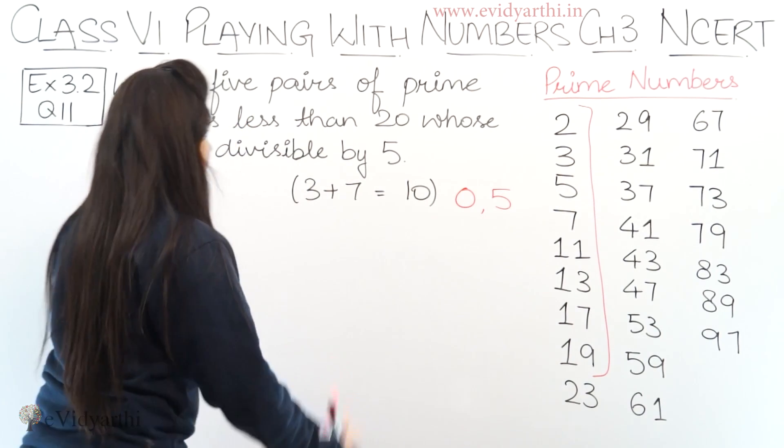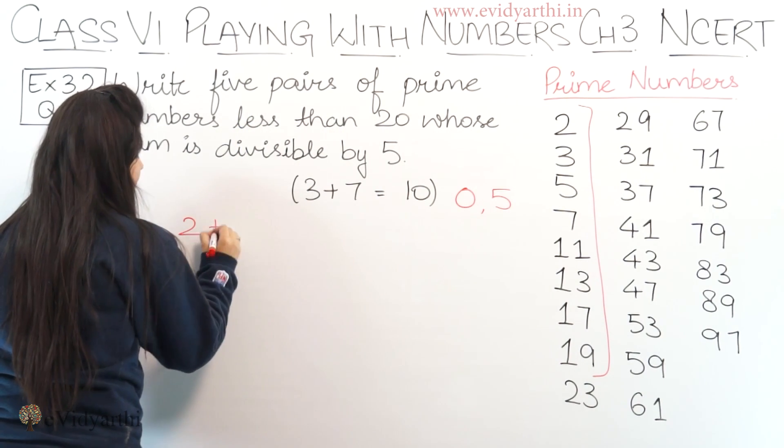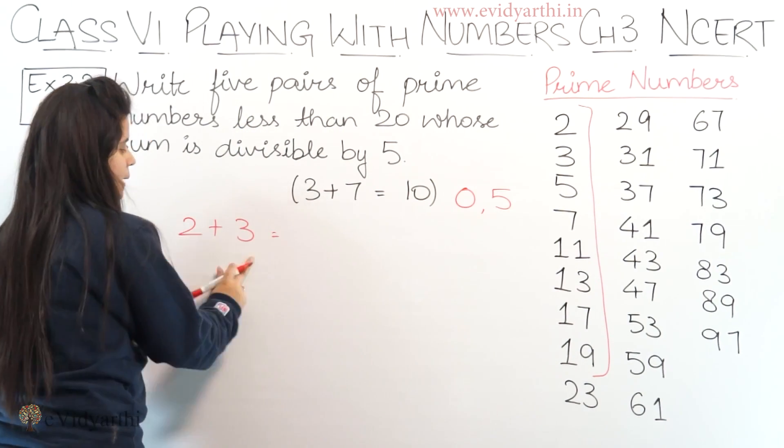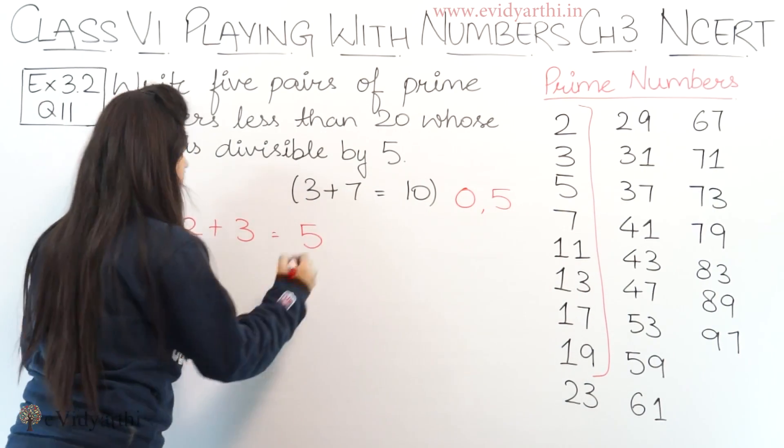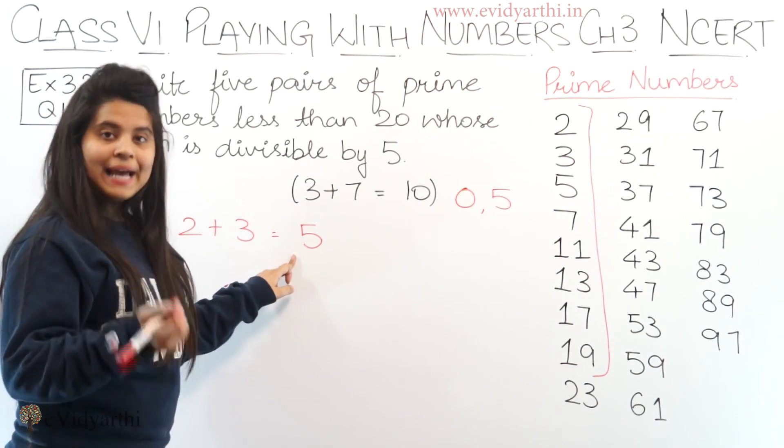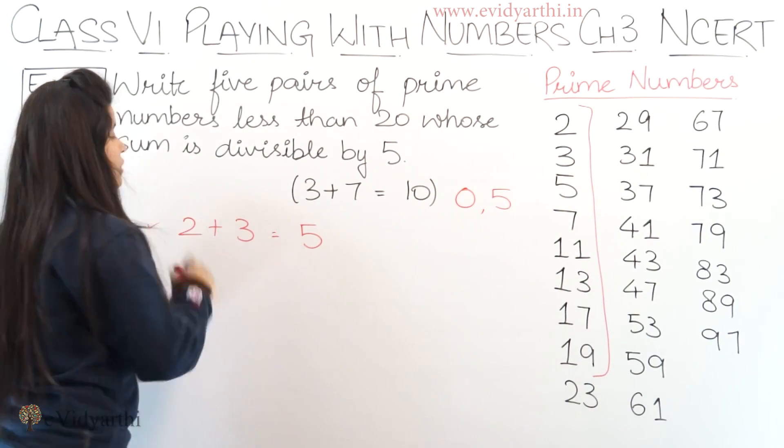So we need to make pairs that when added give a last number of either 0 or 5. So, first let's start with 2. If I add 2 plus 3, both are prime numbers. 2 plus 3 is 5. So this can be our pair, 2 and 3, because 5 comes in the 5 times table. So one pair is 2 and 3.